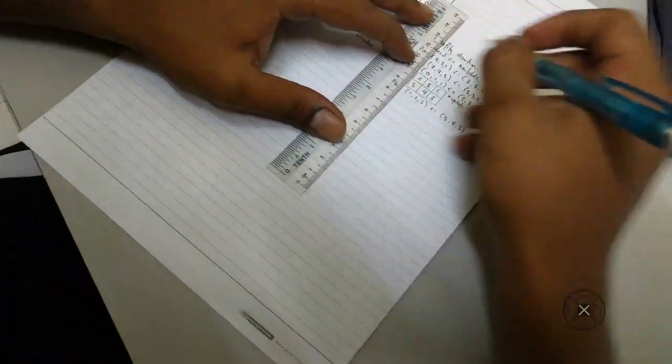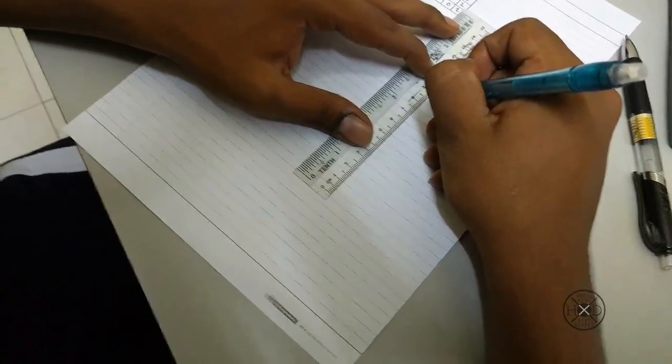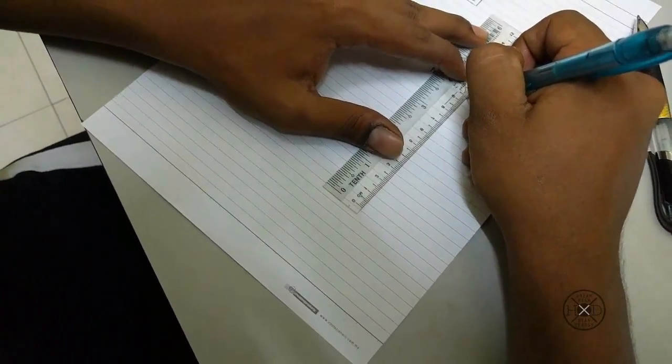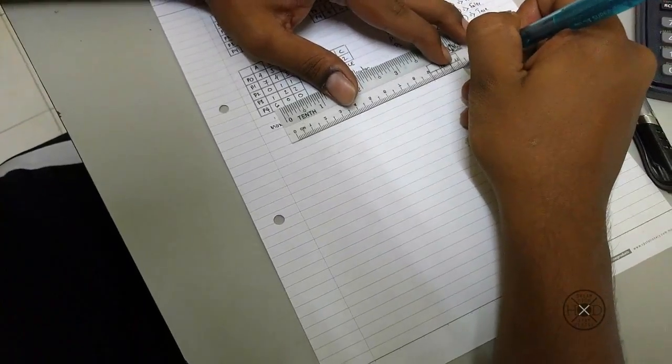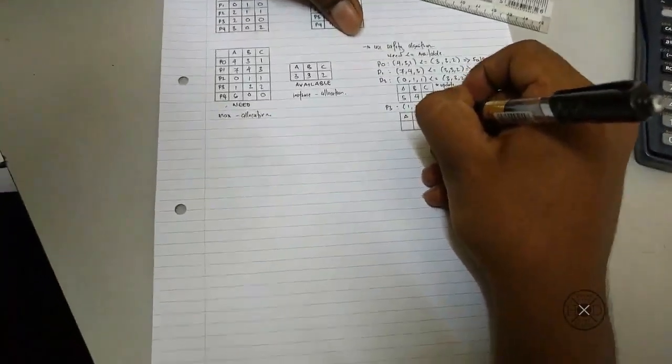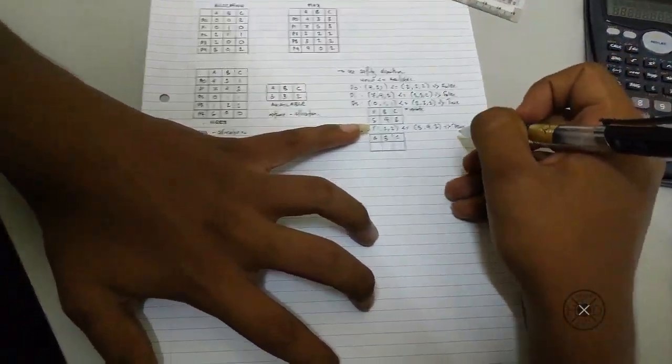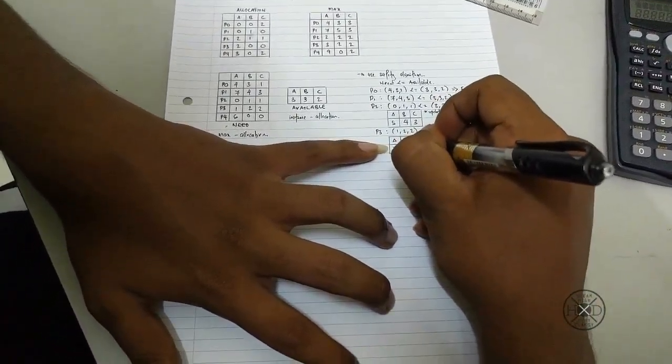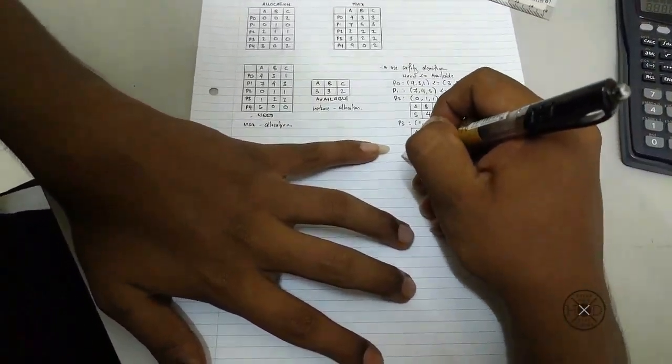Now we need to update again. Just the same formula. So the new available table will be 7, 4, 3.